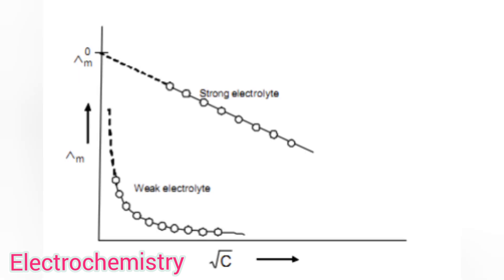You can see this by the graph between molar conductivity and square root of concentration. The upper straight line is for strong electrolytes, and for weak electrolytes we get a curve like below. Thank you.